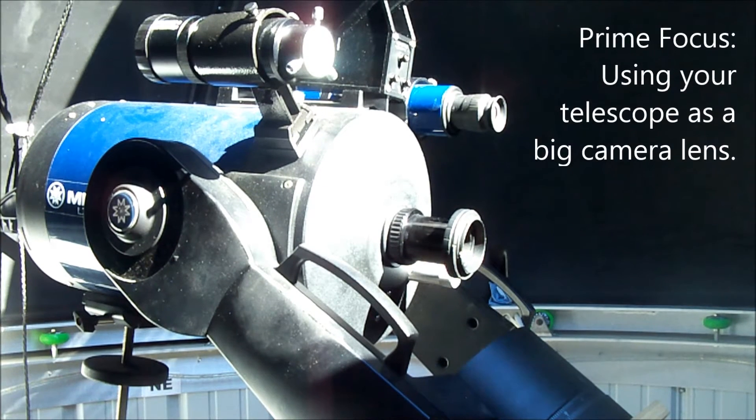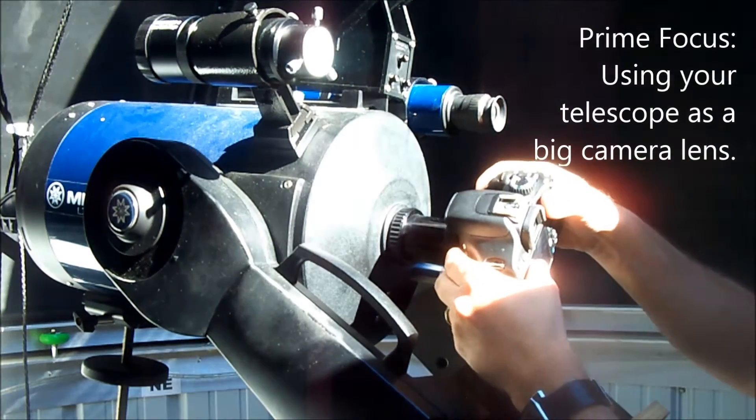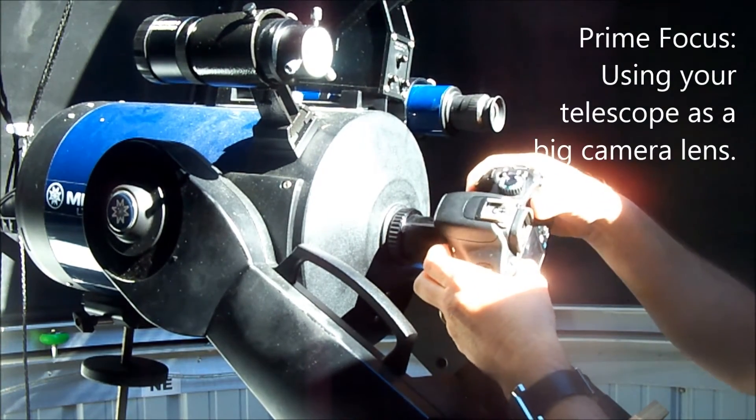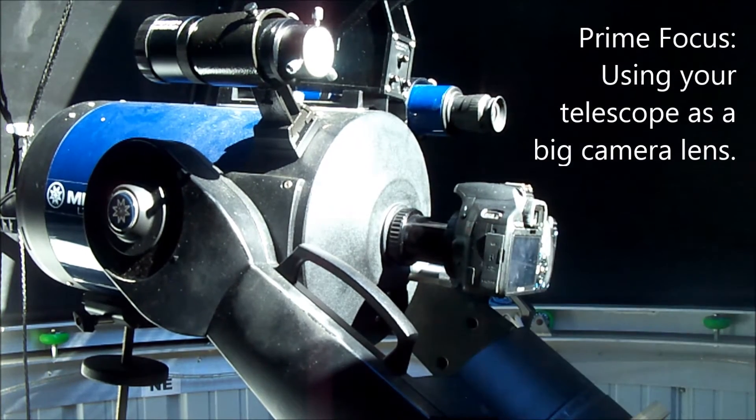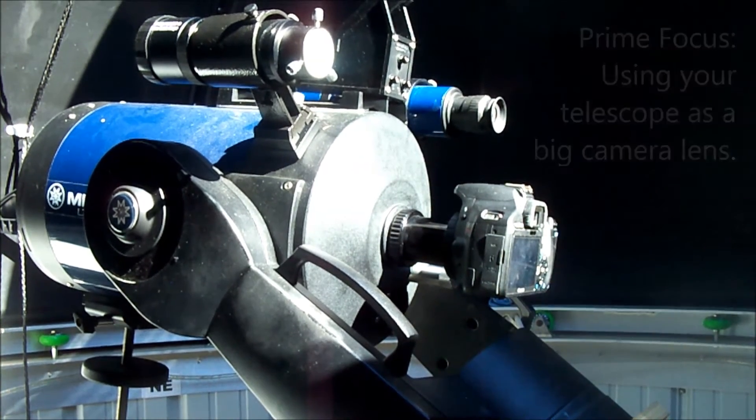Well, your first thought is probably just to connect the camera to the telescope and turn the telescope into a giant camera lens. That's called prime focus, and it works great for things like nebula and the moon, but not so good for planets. When you use prime focus to take photos of planets, they come out really small.